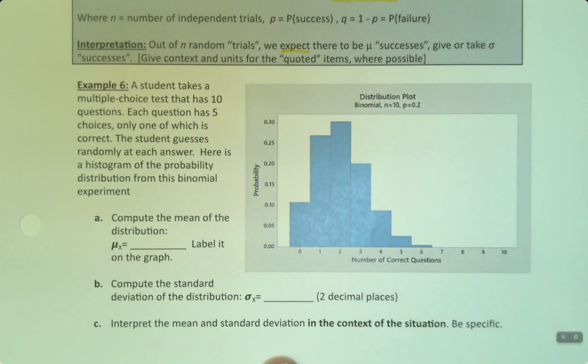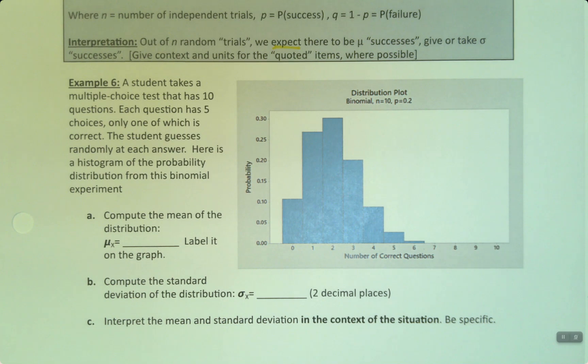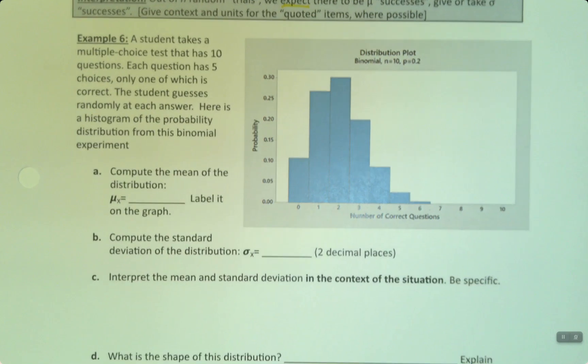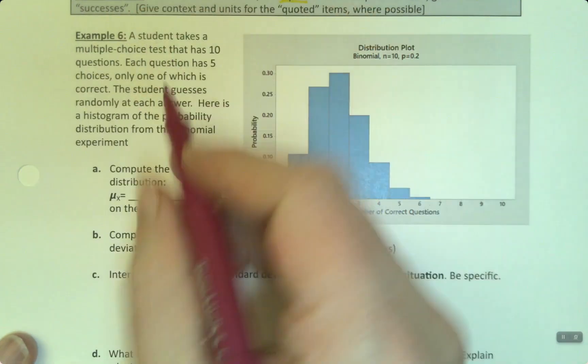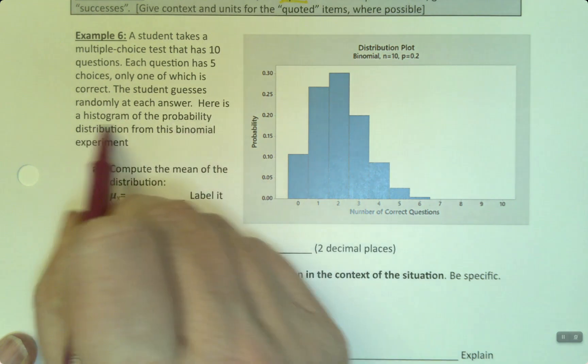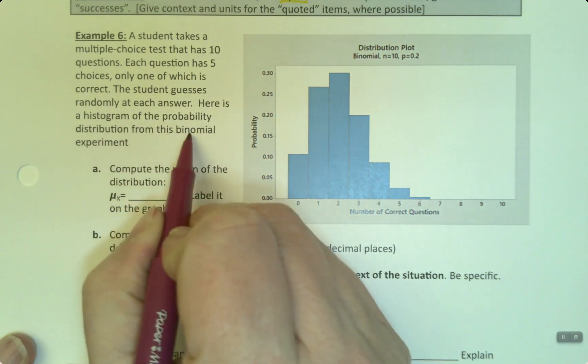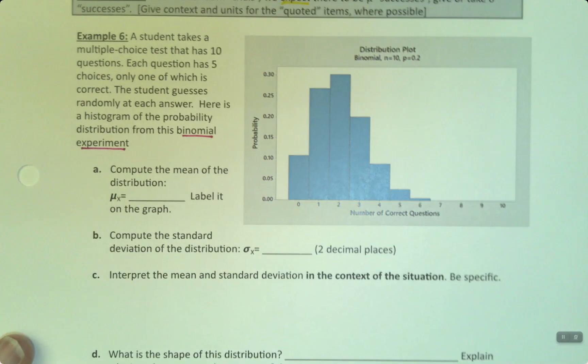So let's look at this. We have a student takes a multiple-choice test that has 10 questions. Each question has five choices, only one of which is correct. This sounds familiar because this is the same setup. The student randomly guesses each answer. Here's the histogram. So we've already proven this is binomial. Here's the histogram for the probability distribution for this binomial experiment.